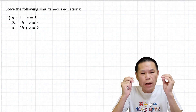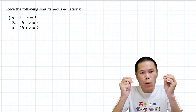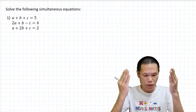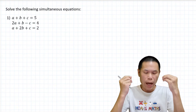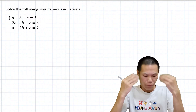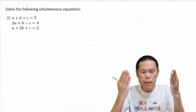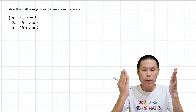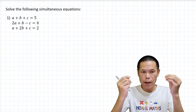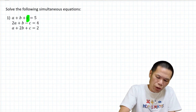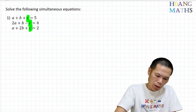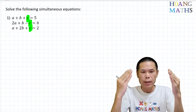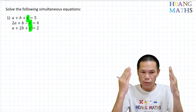First one — to solve this kind of simultaneous equations, step number one, we need to eliminate one of the variable letters. We can either eliminate variable a, b, or c. But in this case, eliminating variable c is easier because the coefficients of c are the same, so we can simply add or subtract to get rid of variable c.